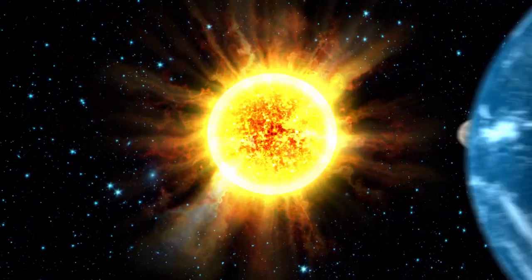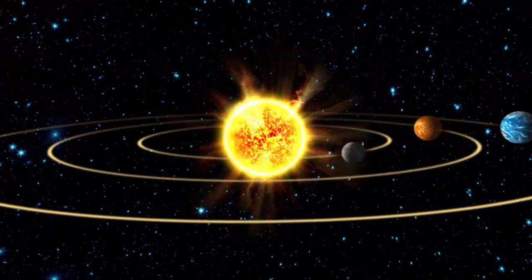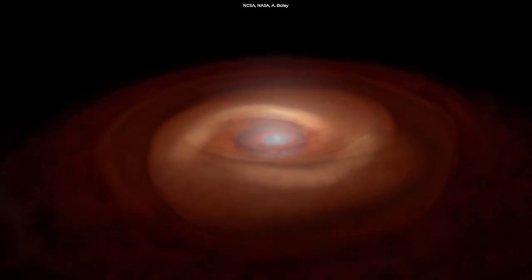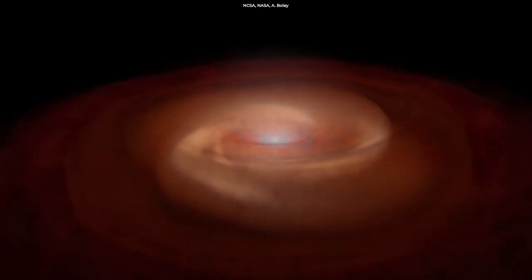Planets in the solar system have a coplanar orbit, meaning they orbit in the same plane around the Sun. And that's because during the solar system's formation, the planets formed out of a disk of dust surrounding the Sun.